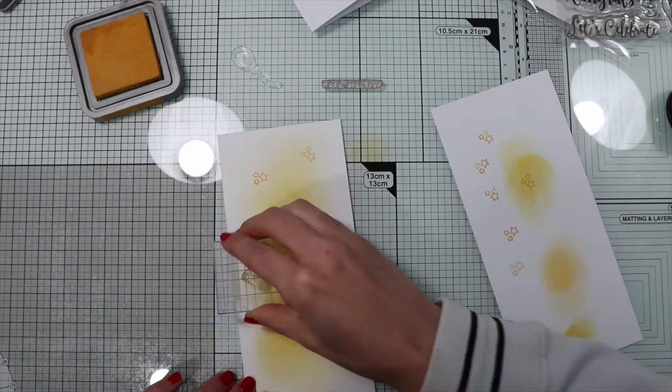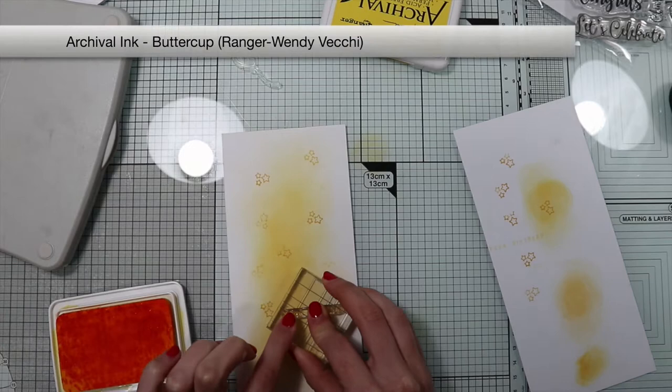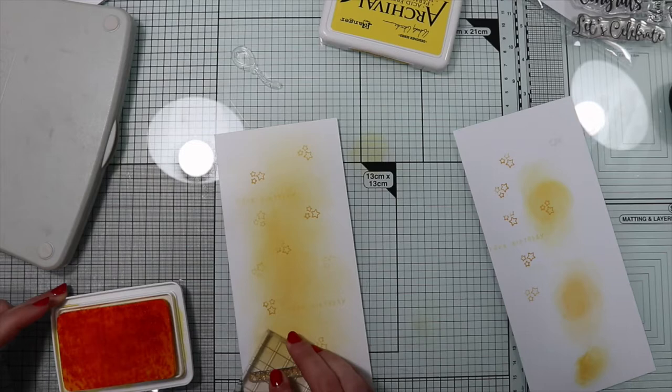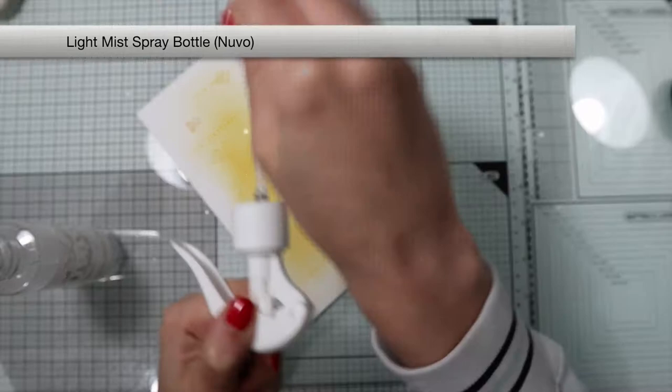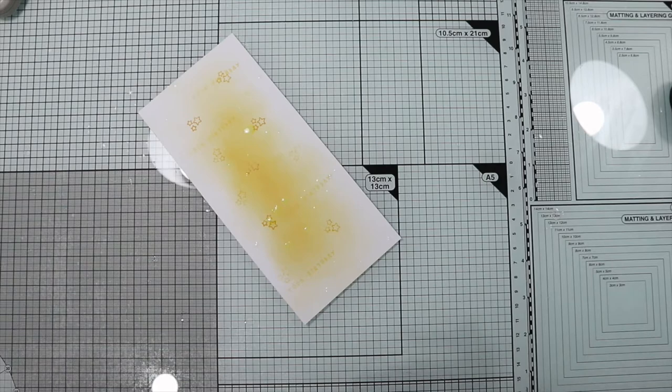With yellow archival ink, much lighter than the yellow I used before, I keep doing some random stamps, this time with a text stamp. I keep adding details to my background by spraying water drops. These drops are going to react with the distressed oxide, creating a beautiful ghost effect.